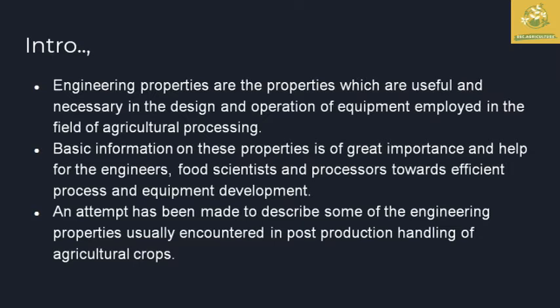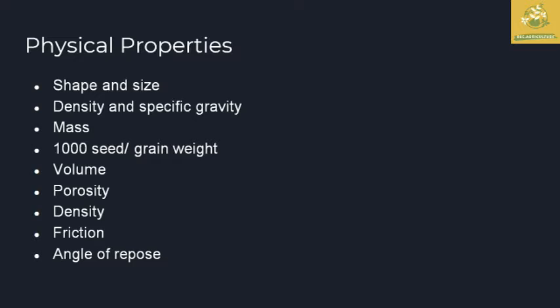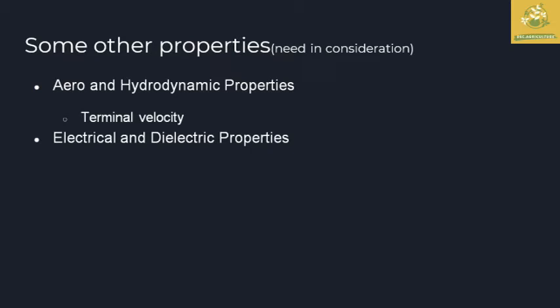These properties are described for post-harvesting handling of agriculture crops. The physical properties we mainly study for different agriculture commodities are: shape and size, density and specific gravity, mass, thousand seeds per grain weight, volume, porosity, density, friction, and angle of repose. Other properties also needed include aero and hydrodynamic properties such as terminal velocity, as well as dielectrical and dielectric properties.